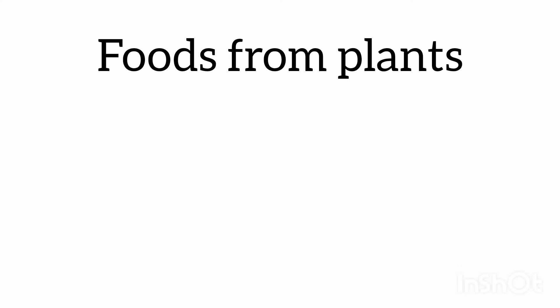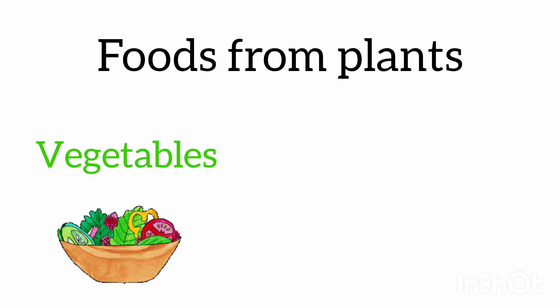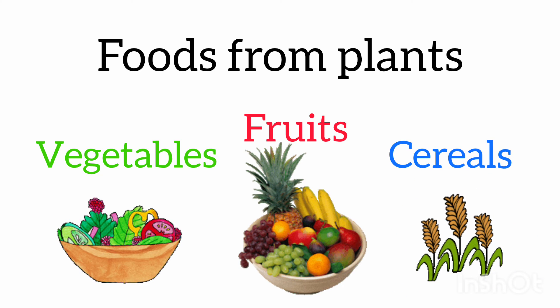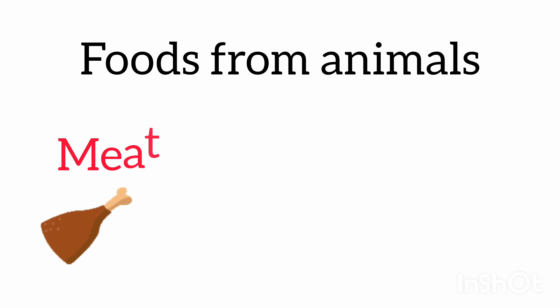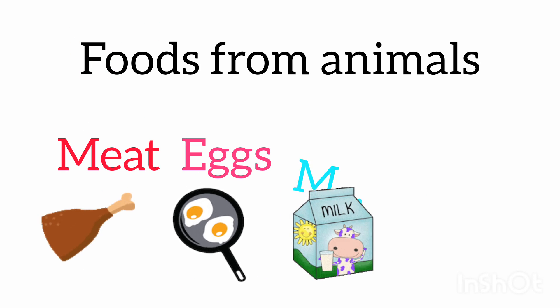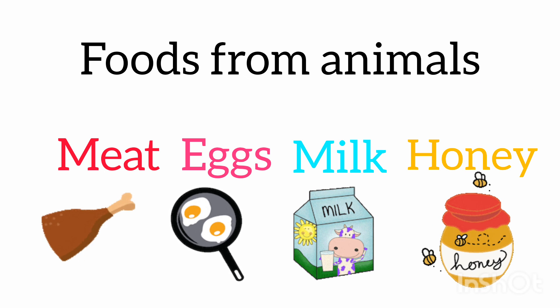Food from plants includes vegetables, fruits, and cereals. Food from animals includes meat, eggs, milk, and honey.